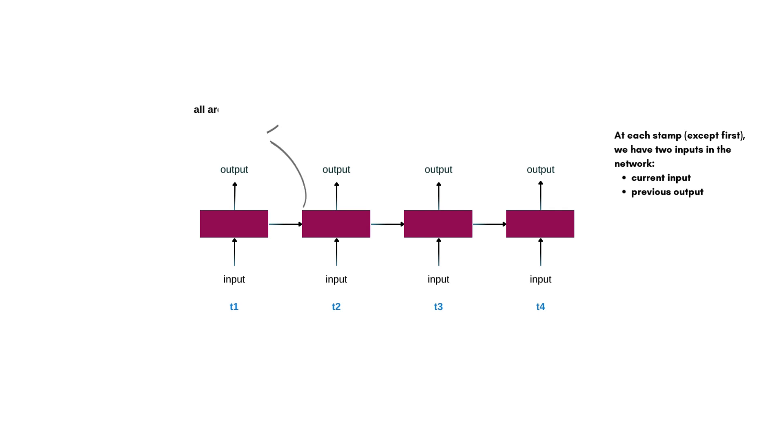The network at all steps is same. That means the same activation function, bias and weights are used and inputs are given one after another in sequential manner.